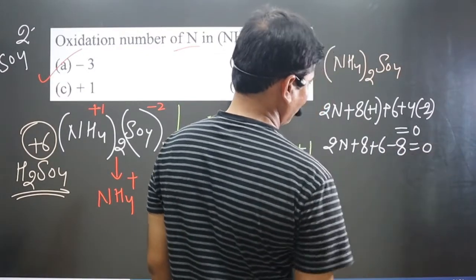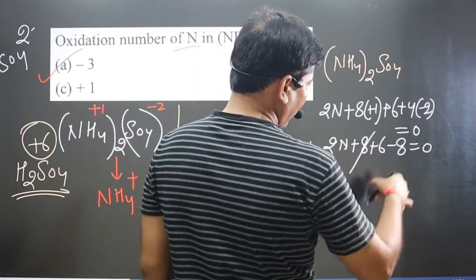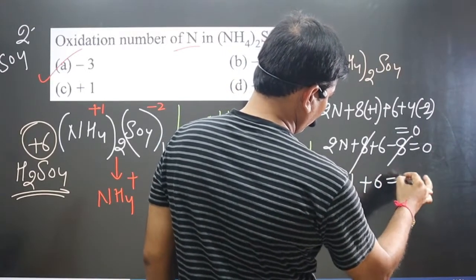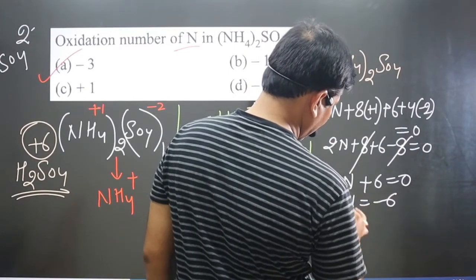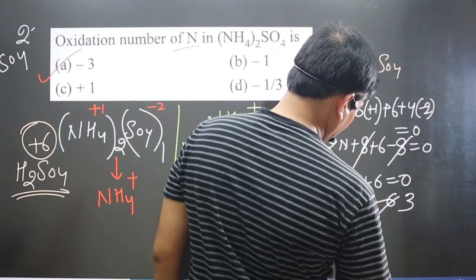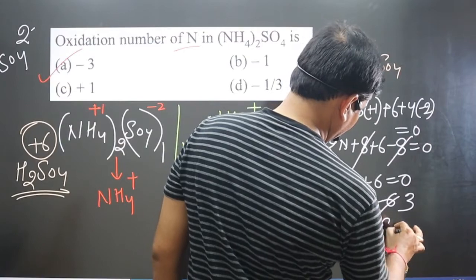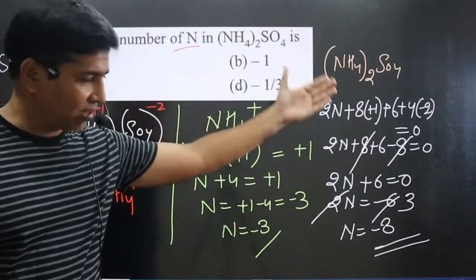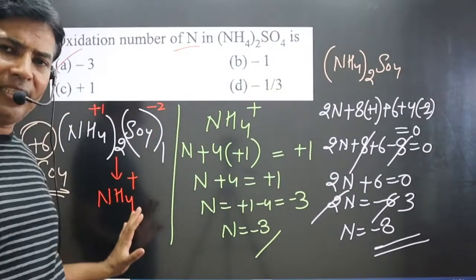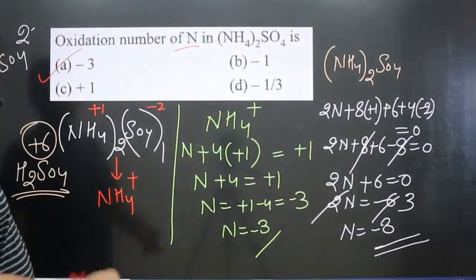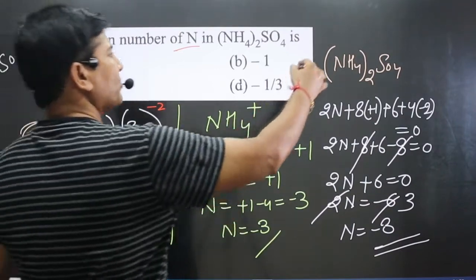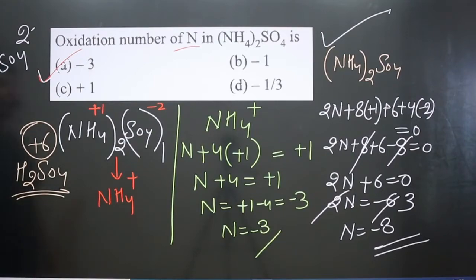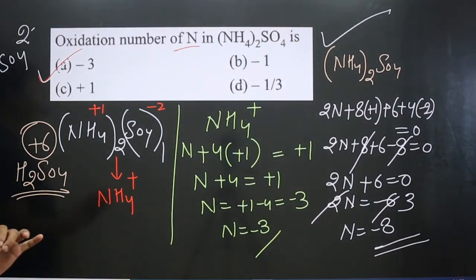Simplifying: 2N + 8 + 6 − 8 = 0, so 2N + 6 = 0, giving 2N = −6, and therefore N = −3. Nitrogen is present in the −3 oxidation state. This method also works, though the first method is easier. Either way, nitrogen shows a −3 oxidation number — the correct answer.